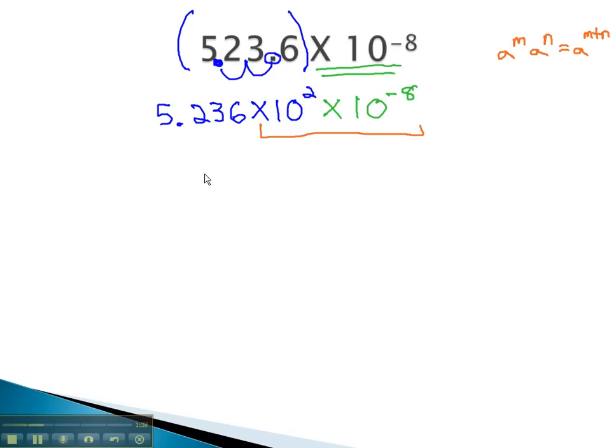We will add the exponents together on the tens to get 5.236 times 10 to the 2 and negative eight, which gives us negative six for our correct answer in scientific notation.